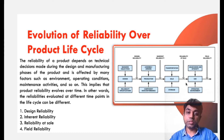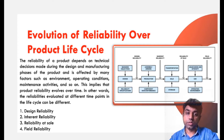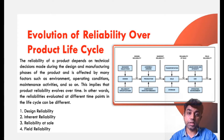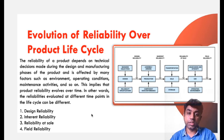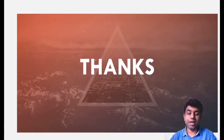Once the product has been sold and the customer starts using it, every customer is different, so the usage and operating conditions change. The reliability available at that stage is called field reliability. So we have four different stages of reliability as per the stages through which the product passes: design reliability, inherent reliability, reliability at sale, and field reliability. That is all about the overall concepts of reliability in today's lecture. Thank you for watching.